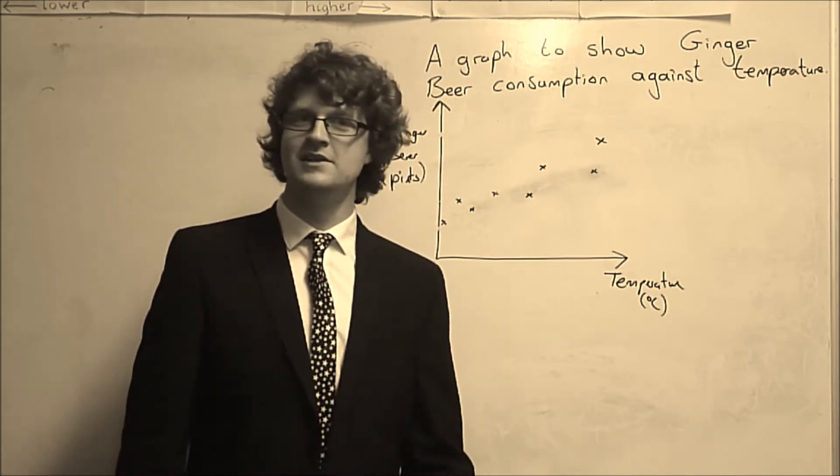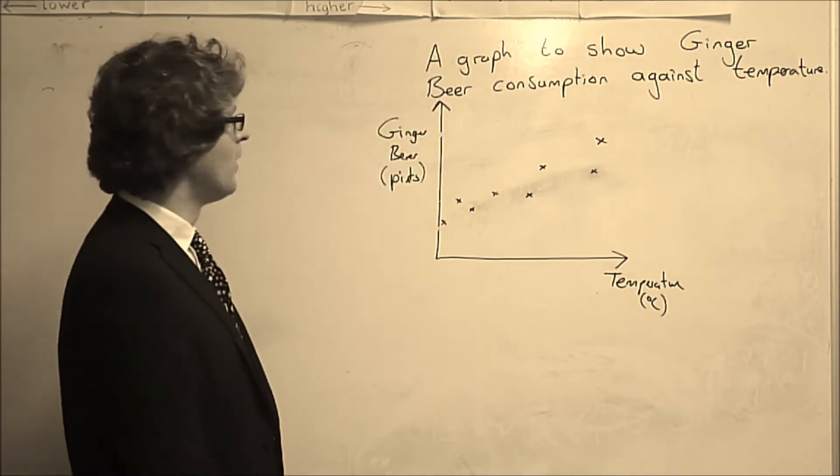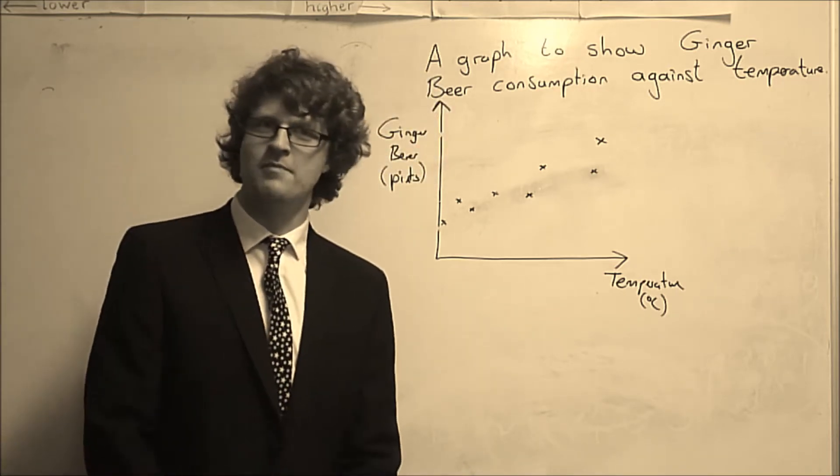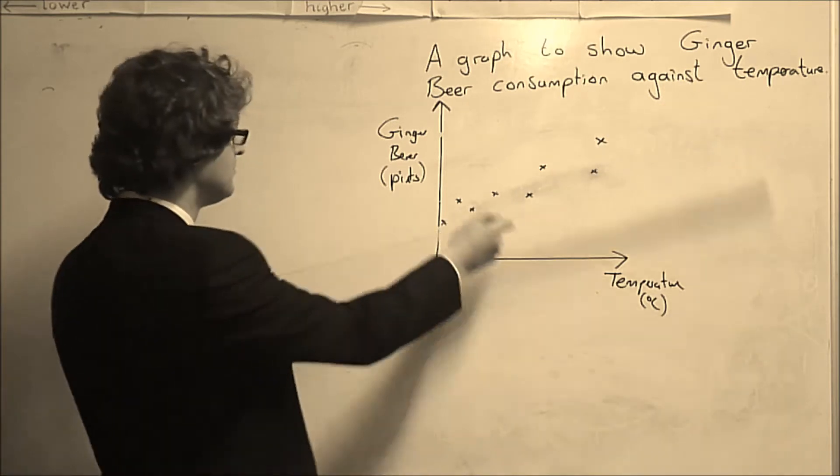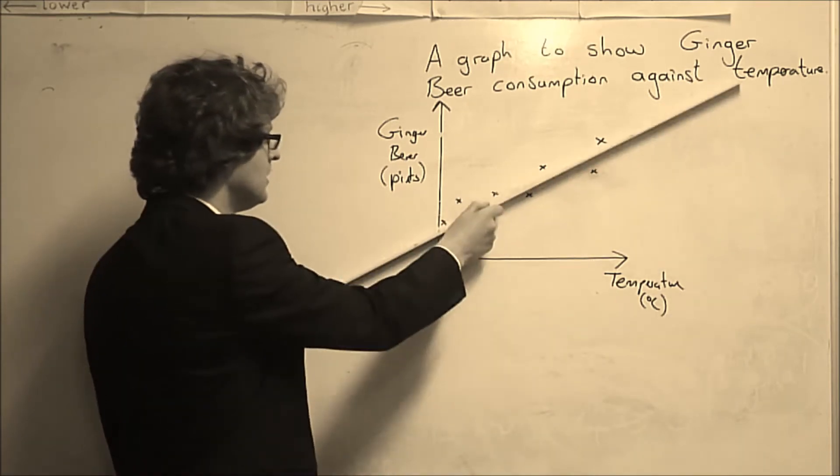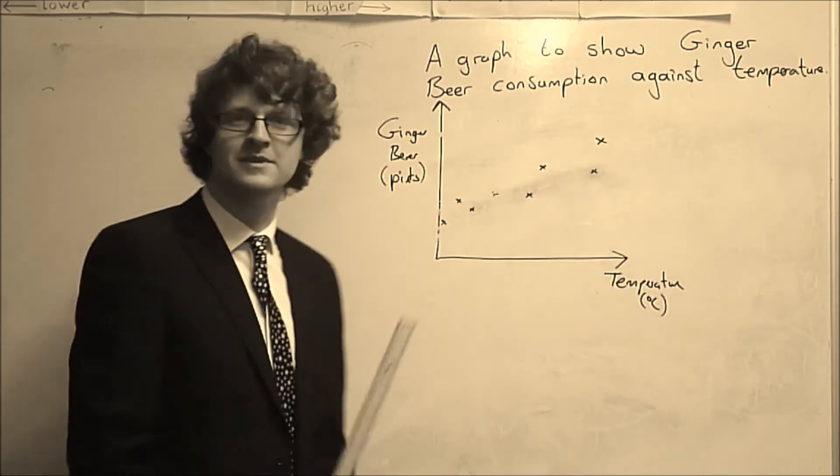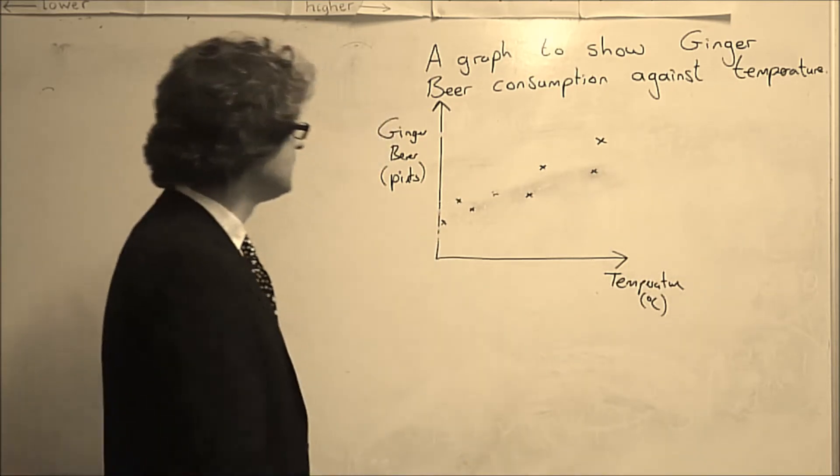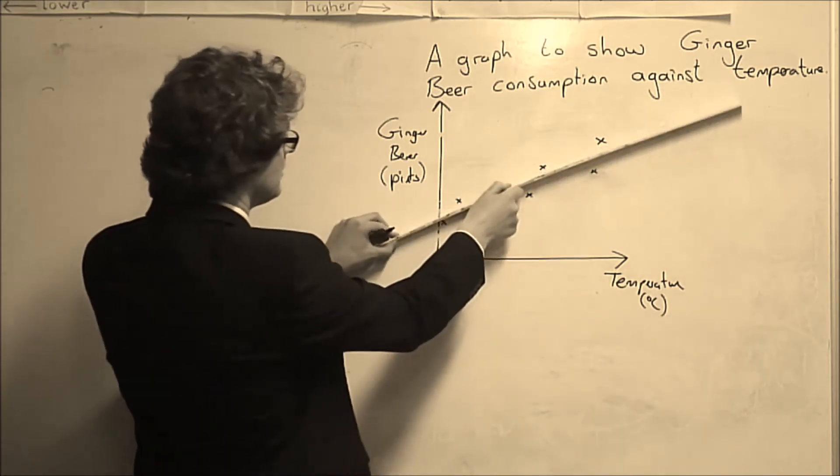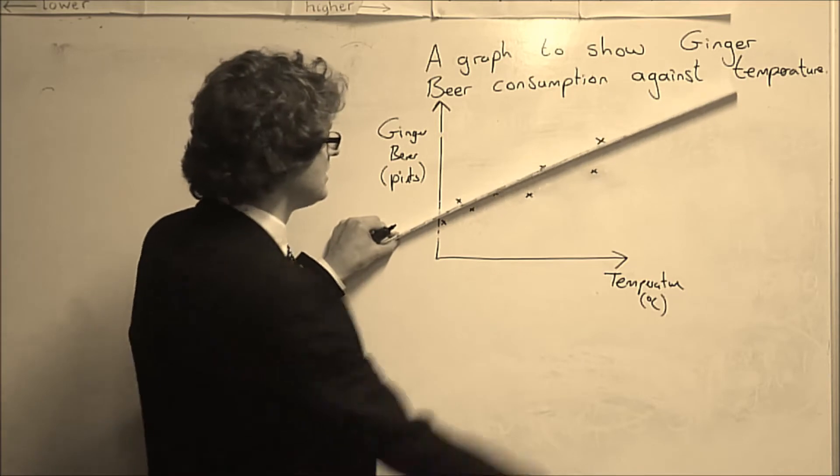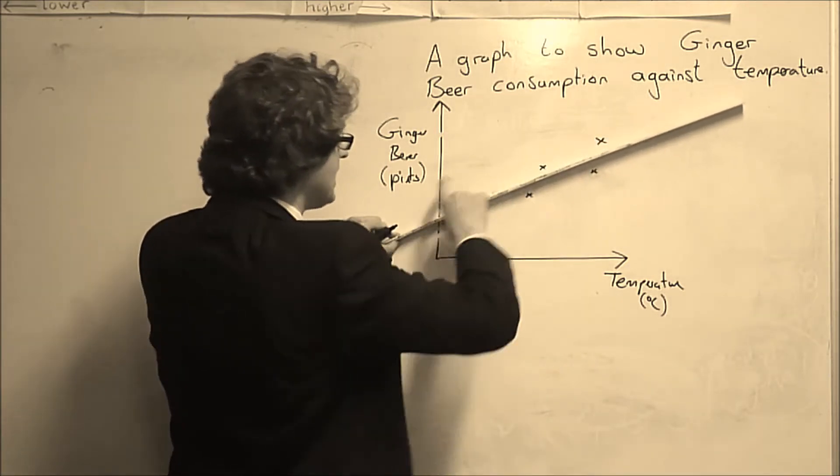Now you may have seen these at GCSE, where you may have had to draw a line of best fit. The problem is it's very difficult to be accurate with this line of best fit, and to minimize the distances between the points and the line and make it so they balance.